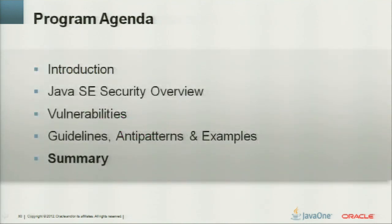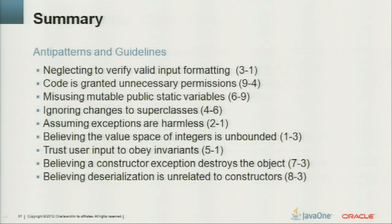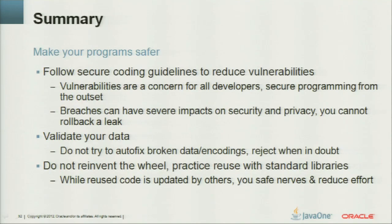Those were the nine chapters of the Java secure coding guidelines. In summary: follow the secure coding guidelines to reduce vulnerabilities. Vulnerabilities are a concern for everybody — breaches, especially information leaks, often cannot be rolled back. Validate your data, don't try to autofix, don't reinvent the wheel — practice reuse. Reused code is updated by others, saving effort and money.